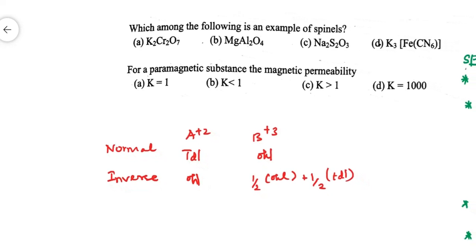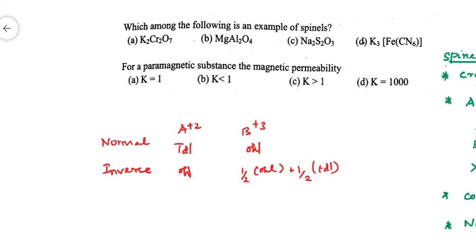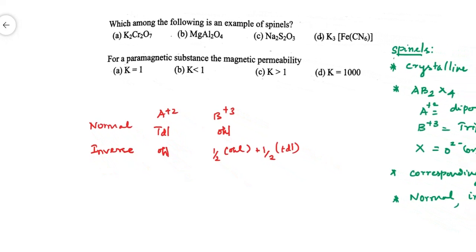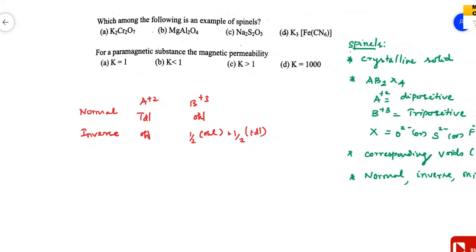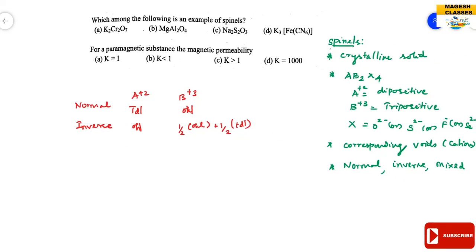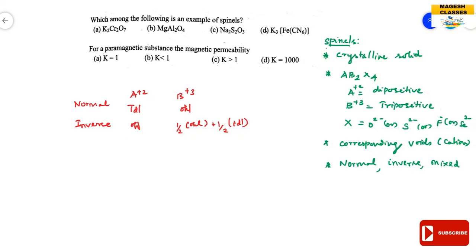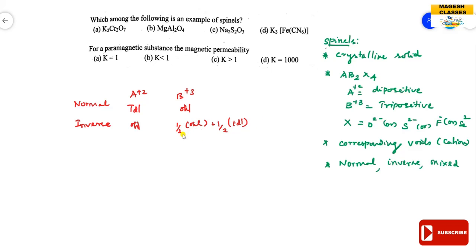This you have to remember. In summary: in normal spinel, the dipositive ion occupies tetrahedral voids and the tripositive ion goes to octahedral voids. In inverse spinel, the octahedral void is occupied by the dipositive ion, and the tripositive ion occupies both octahedral and tetrahedral voids — 1/2 octahedral and 1/2 tetrahedral.